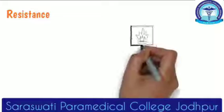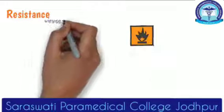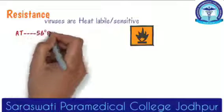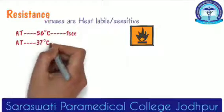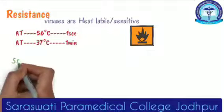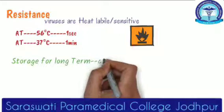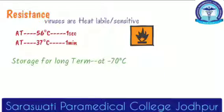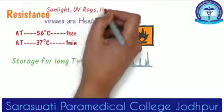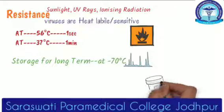Regarding resistance: the majority of viruses are heat labile. At 56 degrees Celsius, viruses are killed in one second. At 37 degrees Celsius, viruses are killed in one minute. For long-term storage, we have to store them at minus 70 degrees Celsius. Viruses are also inactivated by sunlight, UV rays, and ionizing radiation. Importantly, they are resistant to antibiotics — there is no role of antibiotics to kill viruses.